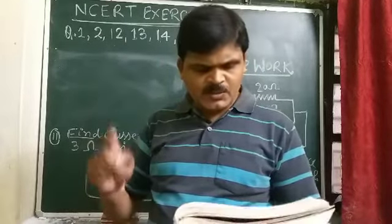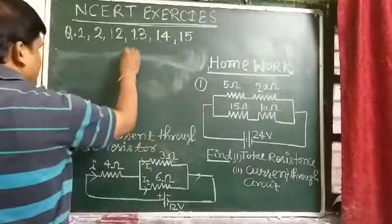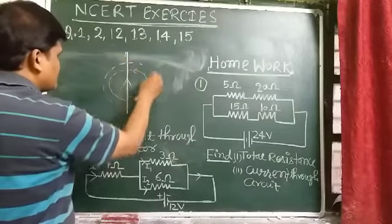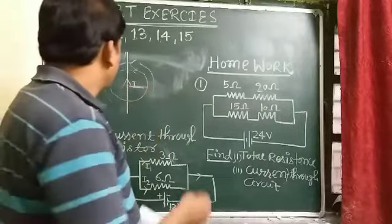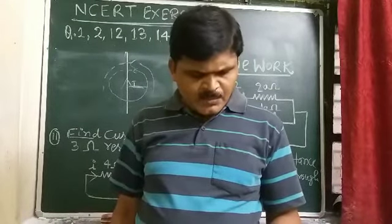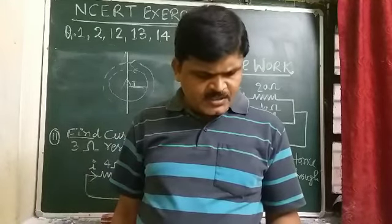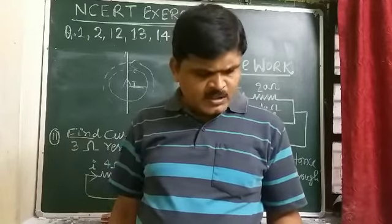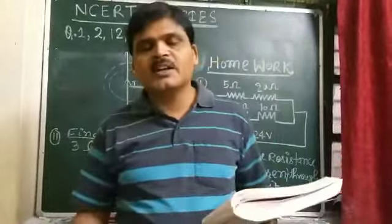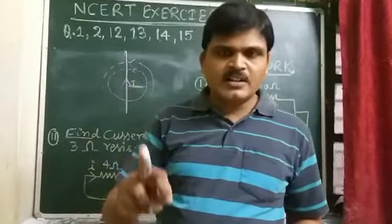Question number 1: Which of the following correctly describes the magnetic field near a long straight wire? Option A — field consists of straight lines perpendicular to the wire? Wrong. Option B — field consists of straight lines parallel to the wire? Wrong. Option C — field consists of radial lines originating from the wire? Wrong. Option D — the field consists of concentric circles centered on the wire? Correct. As you already know, the magnetic field due to a straight current-carrying conductor is in the form of concentric circles.